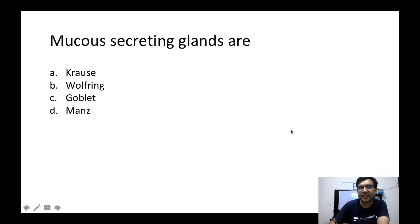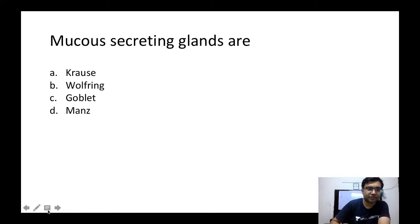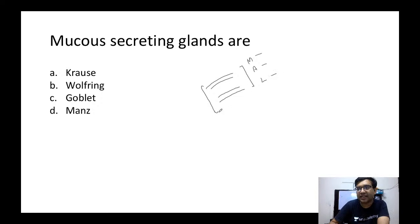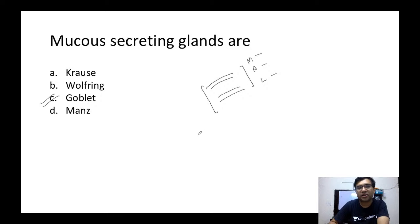Next question: mucus-secreting glands — which of the following? Options: Krause, Wolfring, goblet cells, or Manz glands. The mucus-secreting glands are important because they form an important layer of the tear film. The tear film consists of three sublayers: mucus, aqueous, and lipid. The goblet cells are responsible for mucus secretion.